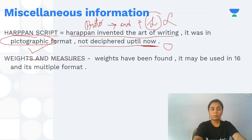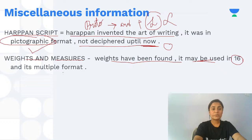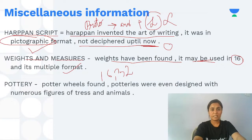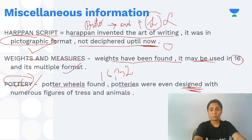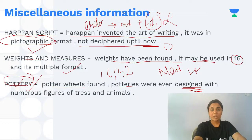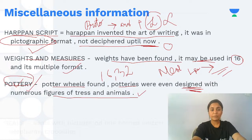Weights and measures were present — the system was based on 16 and its multiples (16, 32, etc.), used for trade. Pottery was also present; potter wheels have been found with designs. Pottery development progressed from Neolithic painted pottery to Chalcolithic linear designs, and in Harappan civilization we see figures of trees and animals added to pottery designs.